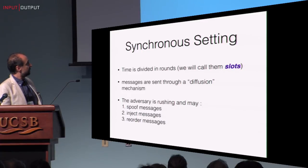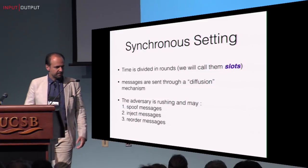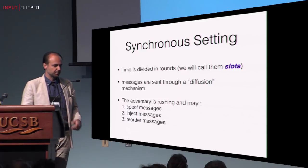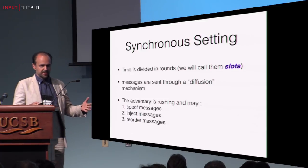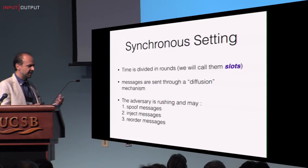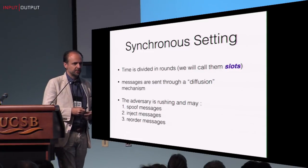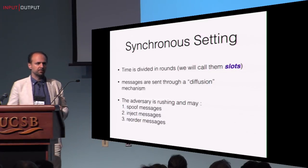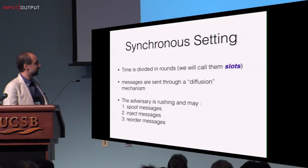We are in a synchronous setting. Time is divided into rounds, which we call slots, and messages are sent through a diffusion mechanism — the same model seen in the previous two talks. The adversary is rushing, meaning he has the advantage: he can deliver messages and spoof their source, inject messages of his own, reorder messages, and send some messages to some parties while refusing others.